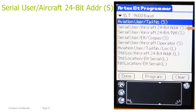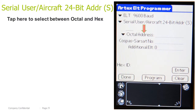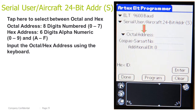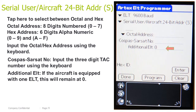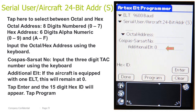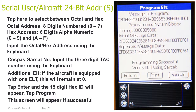Serial user aircraft 24-bit address short. Tap here to select between octal and HEX. Octal address is 8 digits numbered 0–7, and HEX address is 6 digits alphanumeric 0–9 and A–F. Input the octal/HEX address using the keyboard. Input the 3-digit TAC number using the keyboard. Additional ELT: if the aircraft is equipped with 1 ELT, this number will remain at 0. If the aircraft has additional ELTs such as life rafts, this number can go between 1 and 3. Tap Enter and the 15-digit HEX ID will appear. Tap Program. This screen will appear if successful.